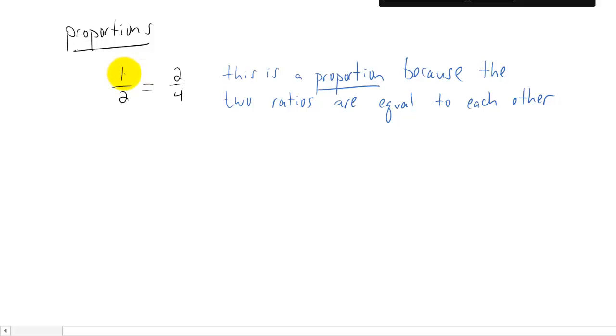Now, I think that most of you right off the bat know that the ratio, 1 half, is equal to the ratio of 2 fourths. But if this were a more complicated problem, how would you test this to see if this was a proportion, if these were equal to each other?